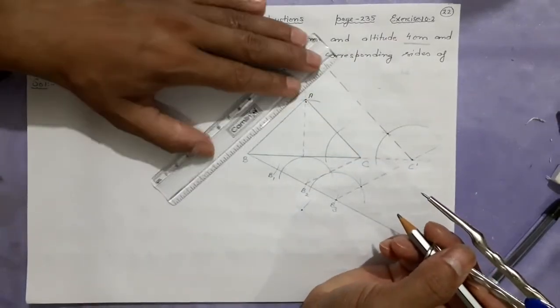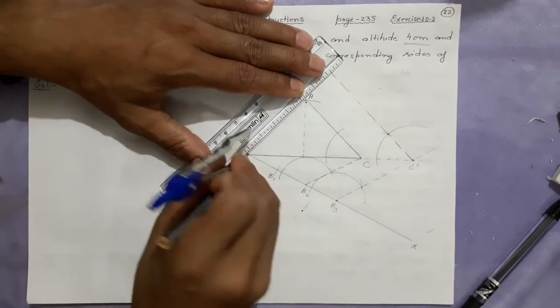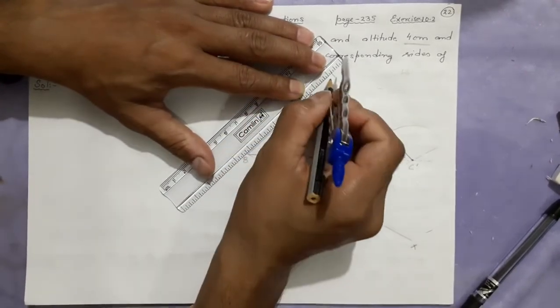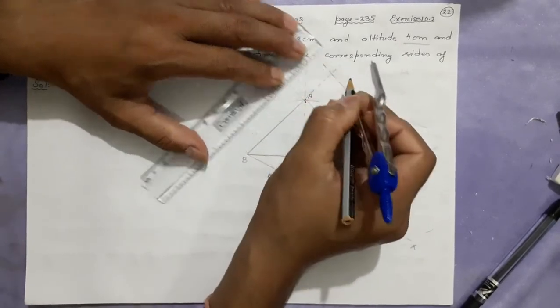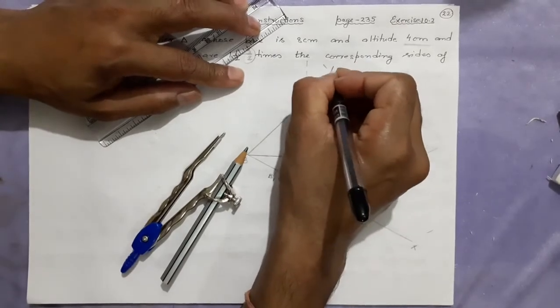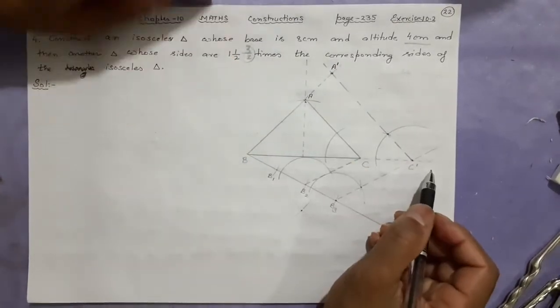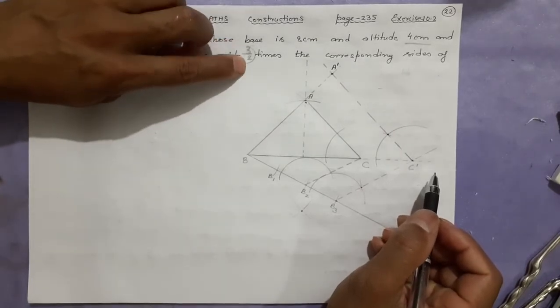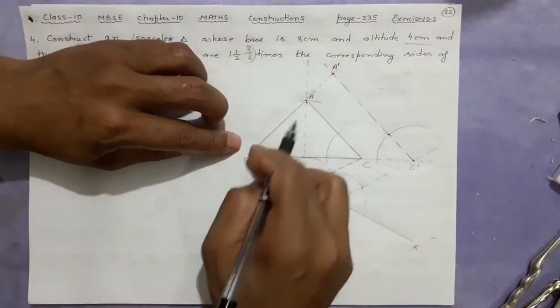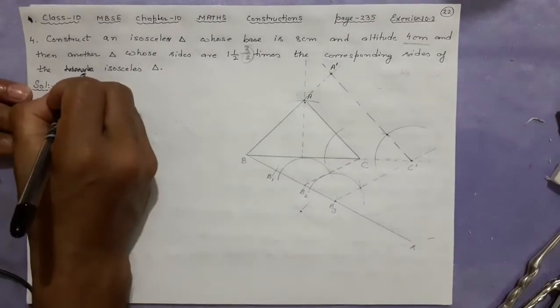Now this will also meet this line. Very carefully when you're extending the line, keep this point, keep this point, and then only extend this. So this point will be A dash. Now you have found A dash BC dash which is three times - of this is two times, you can see this is two times, this is three times. So this is how we have finished that. Now we will write the steps of construction.